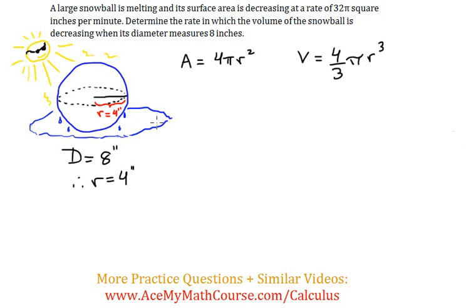Here we have a great related rates problem, the melting snowball. I took the liberty of drawing a picture here. I drew the sun that's melting the snowball and wrote down a few key pieces of information. The diameter of the snowball at the time in which we're interested in analyzing is 8 inches, meaning that the radius is of course 4 inches.